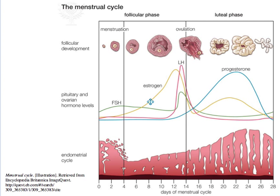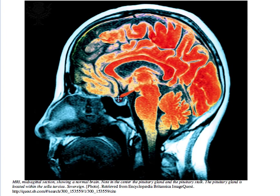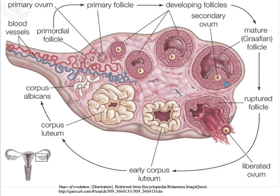As estrogen levels arrive at a midpoint, somewhere around day 8 in the cycle, this represents a critical point which feeds back and sends a message to the anterior pituitary gland, shutting down the production of FSH and LH. This is an example of negative feedback.